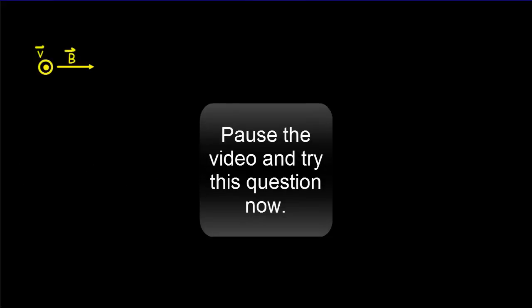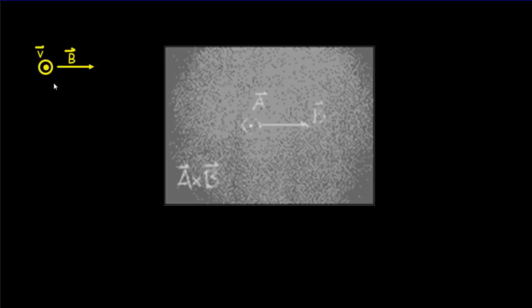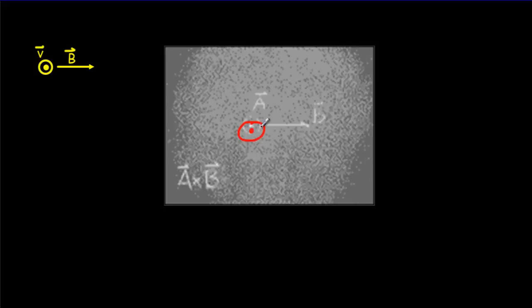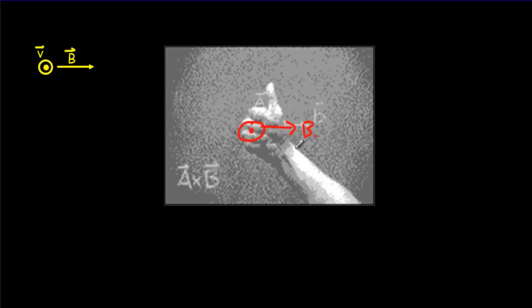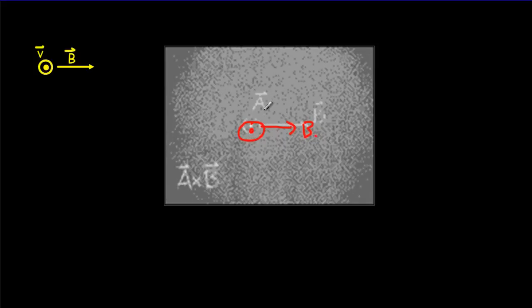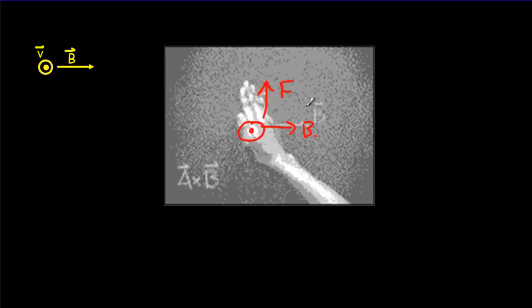Another example — once again, positive charge, use your right hand. In this case, we want to get our fingers coming out of the page first. Get your palm in the direction of the magnetic field, and that will mean your force is upwards.